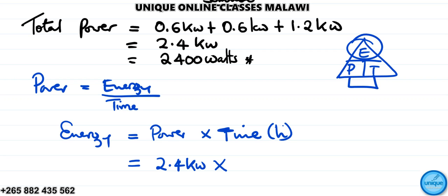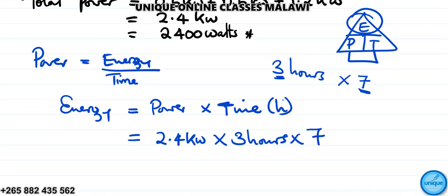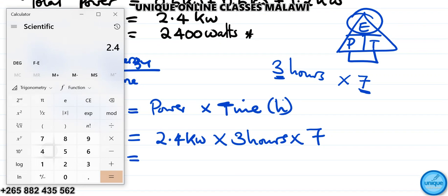The time in hours is three hours daily for seven days, so three hours times seven days. So we have 2.4 times 3, then that times 7. The total energy will be 50.4 kilowatt hours.